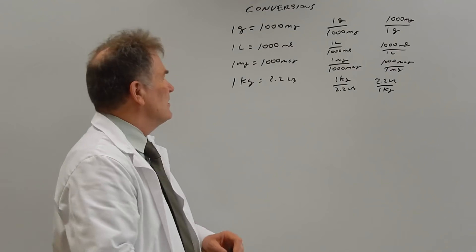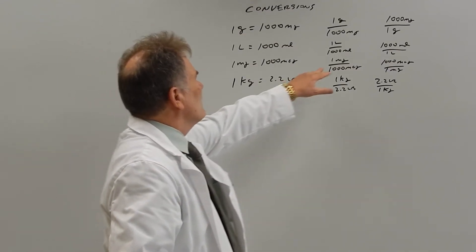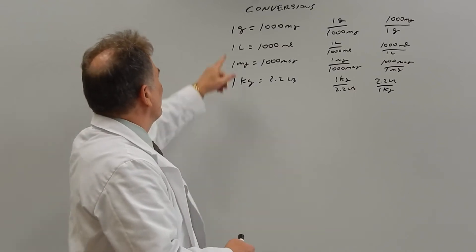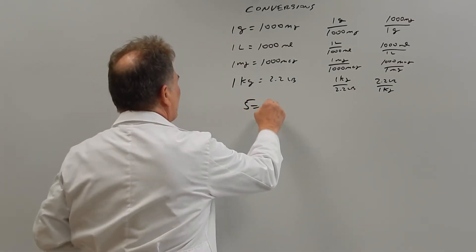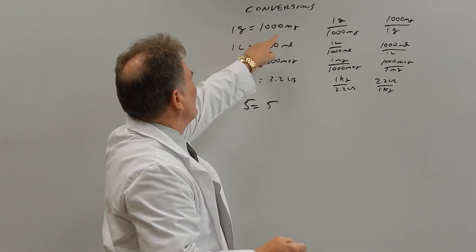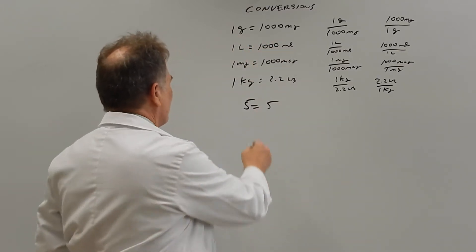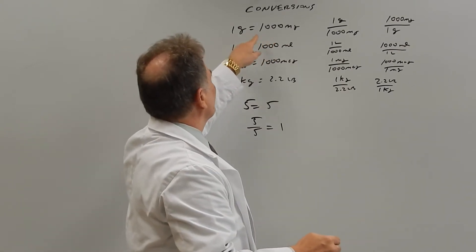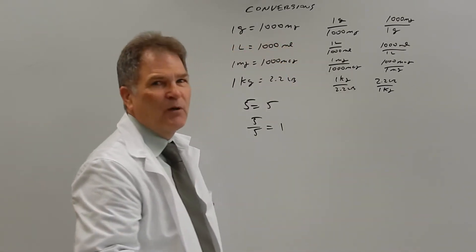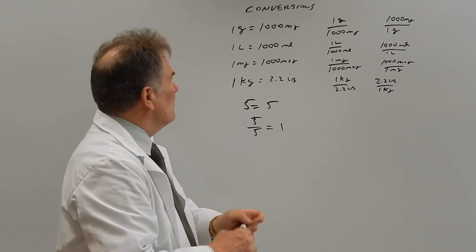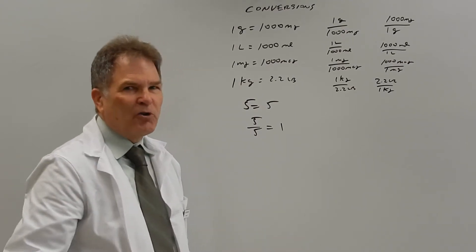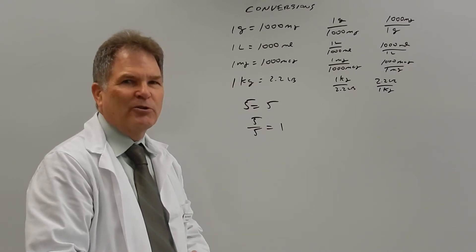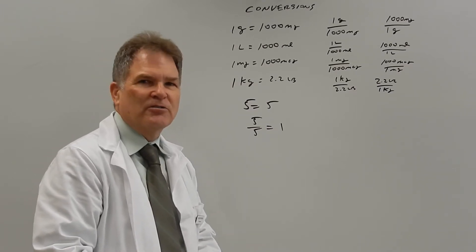The first thing you have to realize is all of these conversion factors always equal one. So just like we have 5 equals 5, right? 1 gram equals 1,000 milligrams. If we divide 5 by 5, we get 1. If we divide 1 gram by 1,000 milligrams, we also get 1. So all we're doing is we're multiplying by 1 to change the appearance of what we want to convert into the units that we desire.